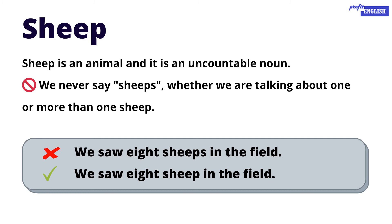The next word is 'sheep.' Sheep is an uncountable noun. We don't say 'sheeps.' Whether you are talking about one or more than one, we always say 'sheep.' For example: 'Eight sheep,' not 'eight sheeps.'